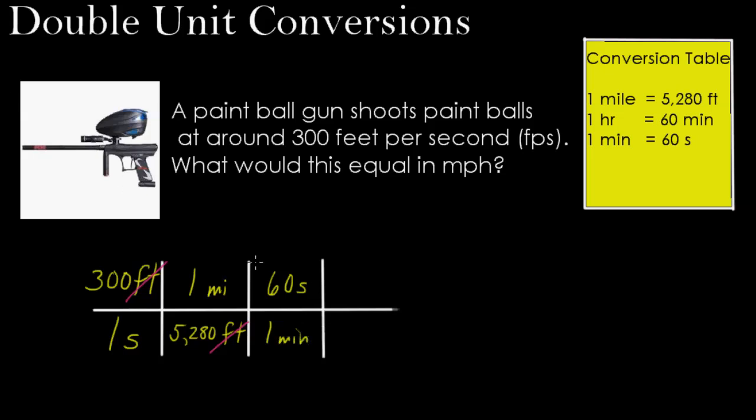This way, I'm going to keep crossing off those units that get canceled out. And right now, I have miles over minutes. I'm going to do one more conversion now. This time, I'm going to take one hour equals 60 minutes to get rid of those minutes. So I'm going to put 60 minutes over one hour.